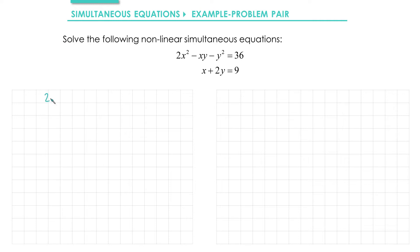We would typically solve simultaneous equations like this using substitution. So we have our first equation, 2x² - xy - y² = 36. We'll label that equation 1 and our second equation, x + 2y = 9. We're going to rearrange the linear equation to get x as the subject. So x = 9 - 2y. We'll call that equation 2.